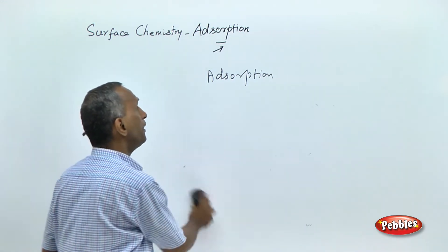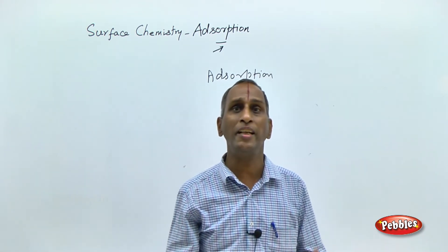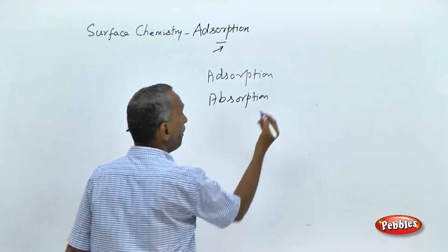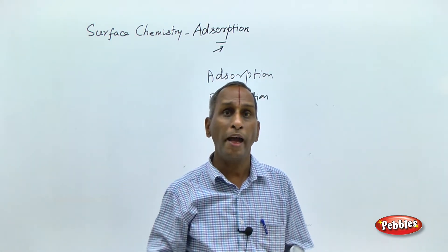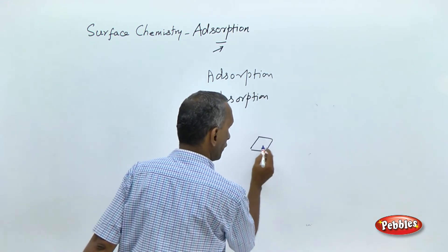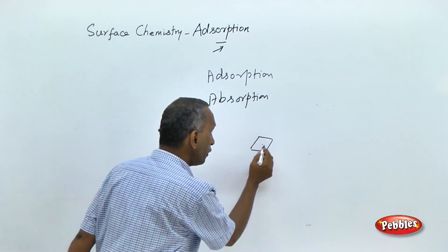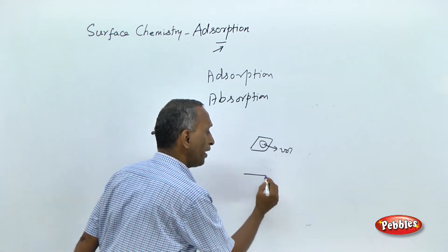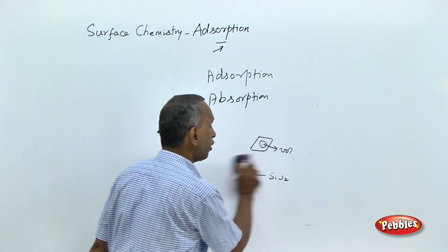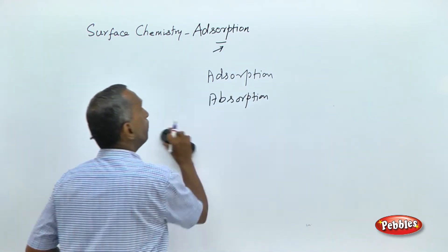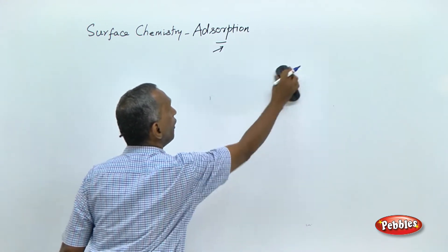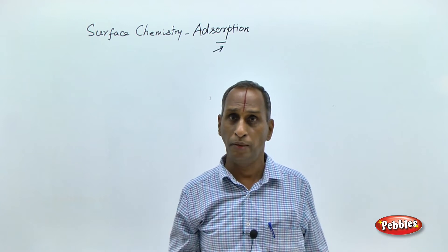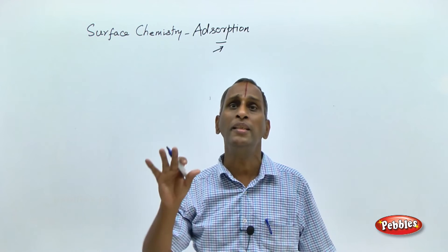To condense: adsorption is the phenomenon of higher concentration at the surface. What is the phenomenon of higher concentration at the bulk? That is called absorption. Absorption is the phenomenon of higher concentration into the bulk. For example, if we put ink on porous paper, the ink particles occupy the volume of the paper — that is absorption. Whereas if you write with a scratch material, it occupies only at the surface — impressions are caused only at the surface. In general, the phenomenon of higher concentration at the surface is called adsorption, and higher concentration into the bulk is called absorption.